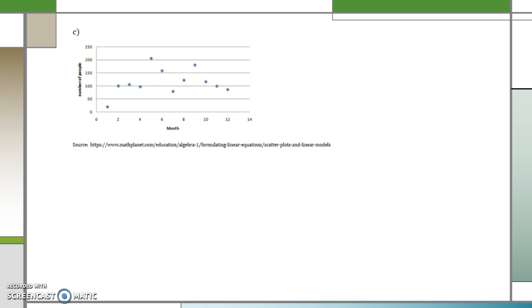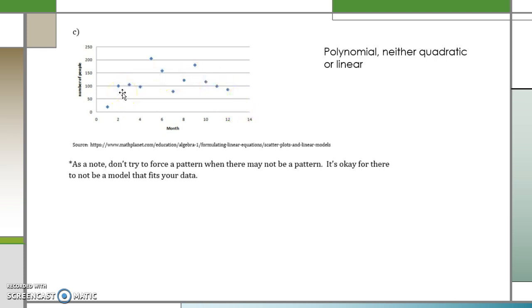And our last data set here, there is no real pattern. If I try to connect these, we're not all going up or going down, there is kind of an upside down pattern, but I would say this is some kind of polynomial but it's neither quadratic or linear. These little data points down here kind of putting a wrench in our plan. Which leads me to state that we should not try to force a pattern when there may not be a pattern. It's okay for there to not be a model that fits our data.